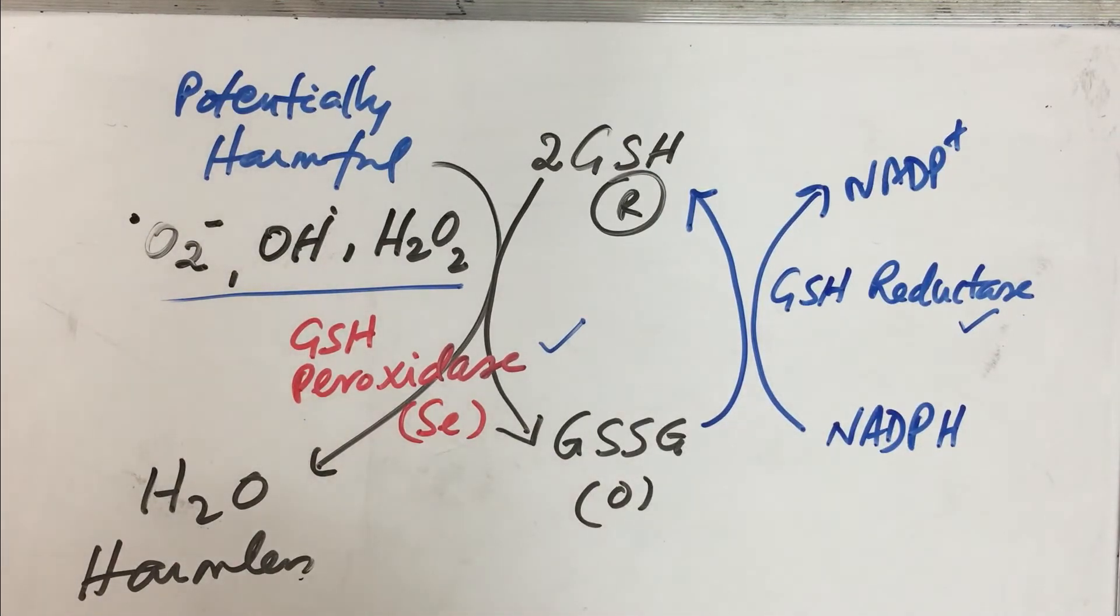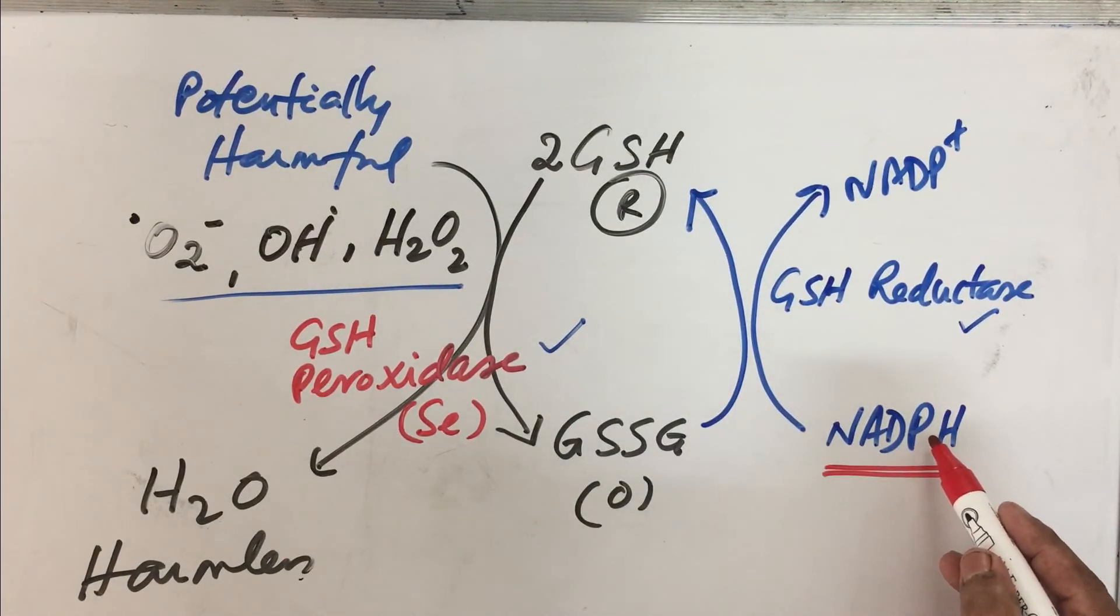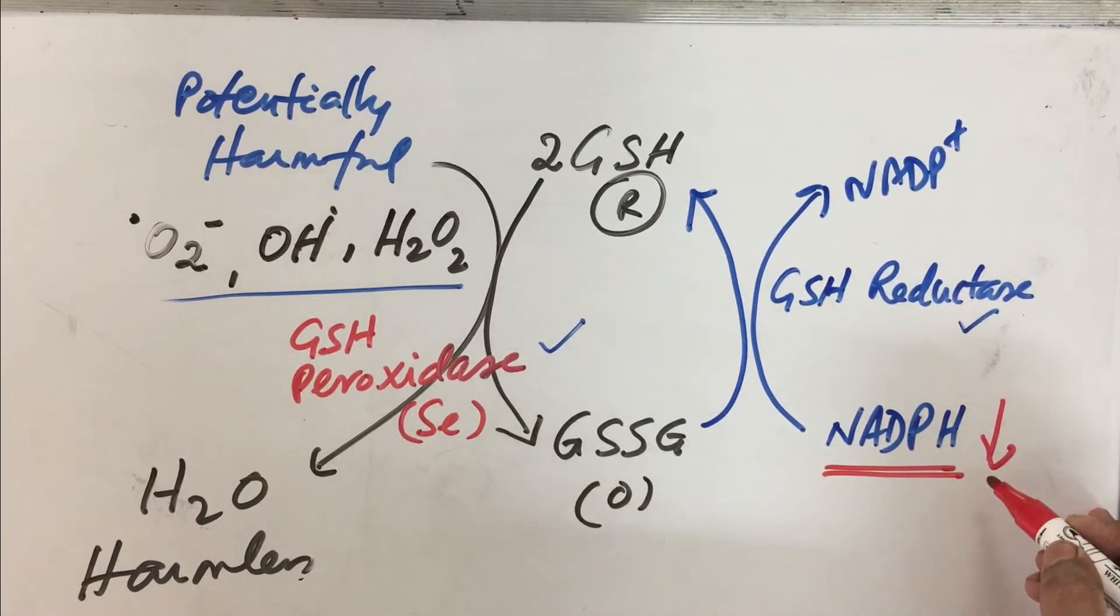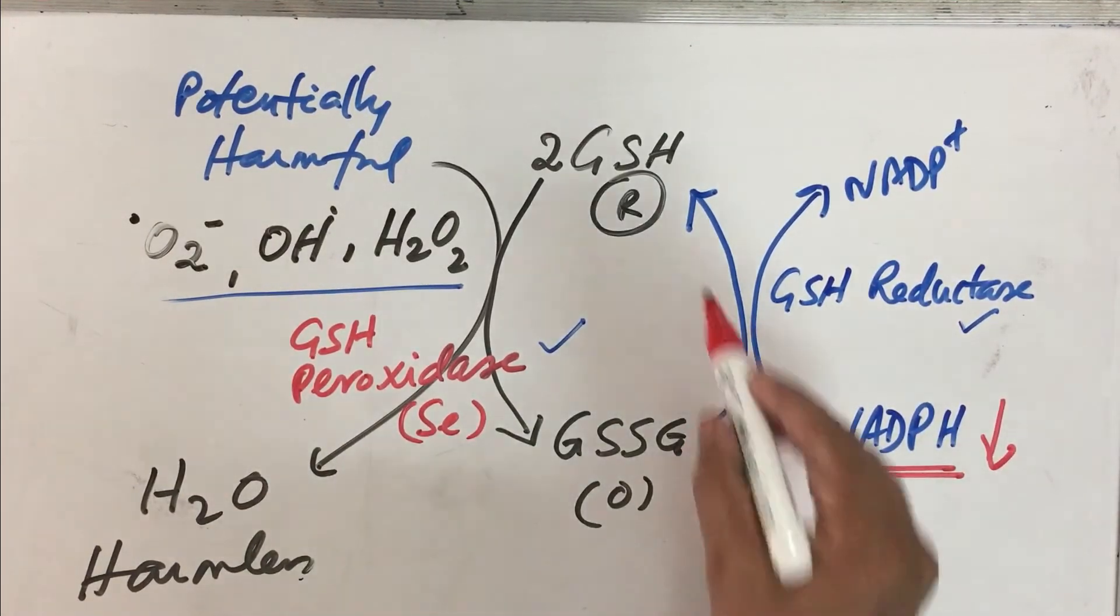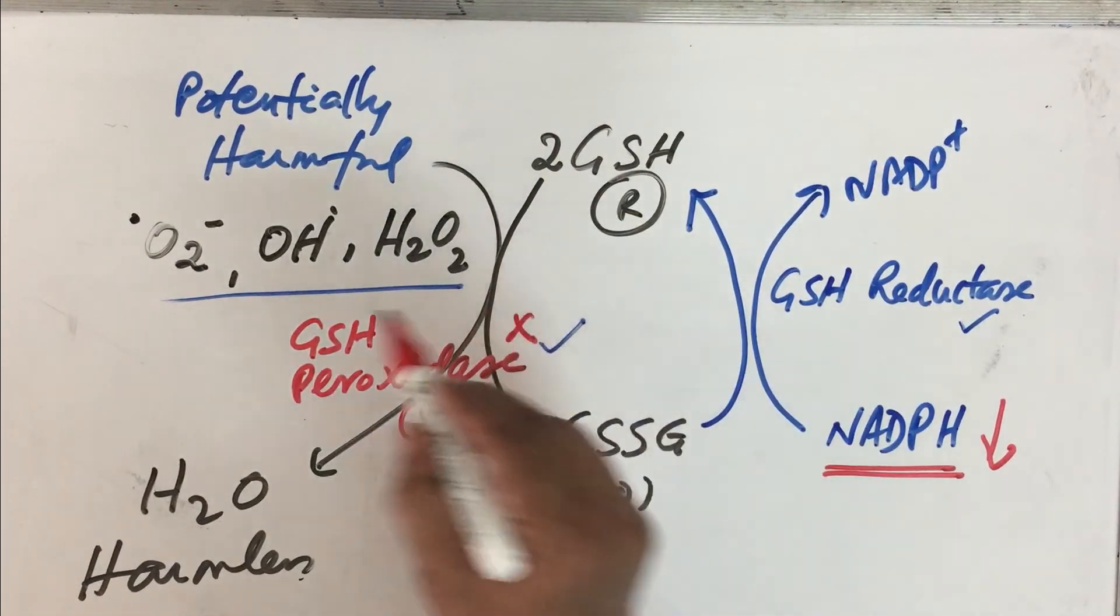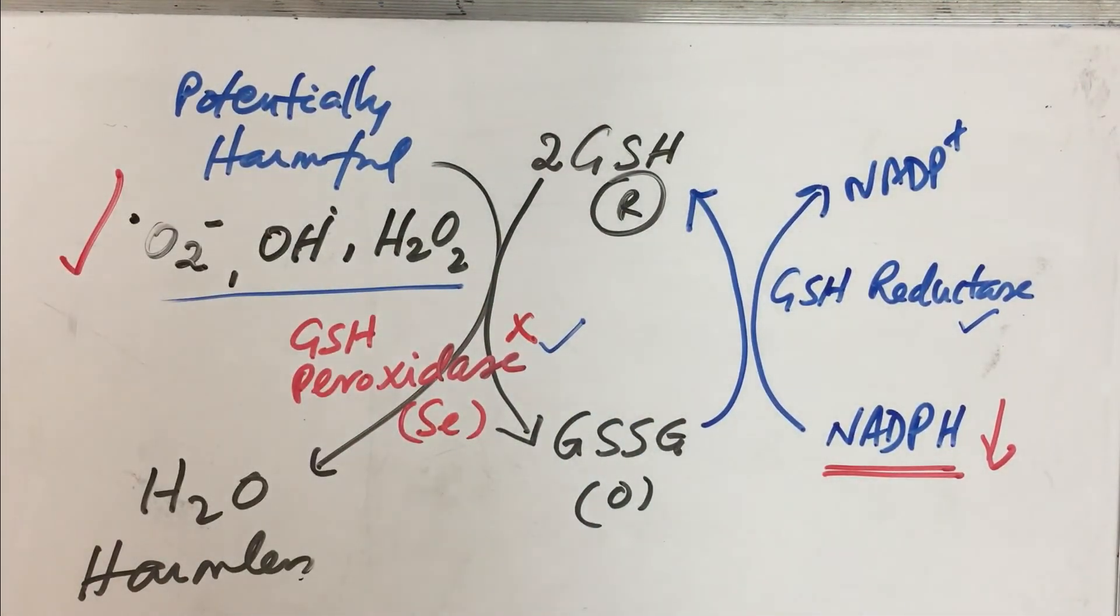We know that pentose phosphate pathway has an important role in supplying NADPH. If glucose-6-phosphate dehydrogenase is absent, this concentration will decrease, which means this conversion cannot occur. This will promote the accumulation of potentially harmful free radicals, and those free radicals will damage membrane integrity. This is a very important aspect.